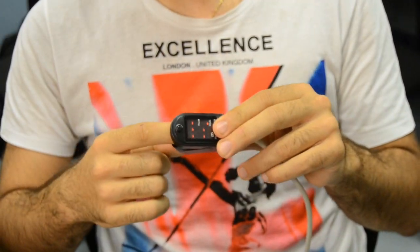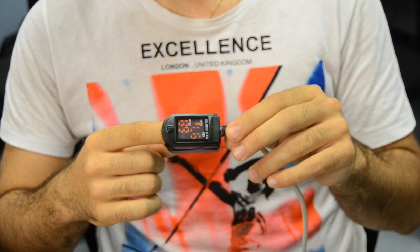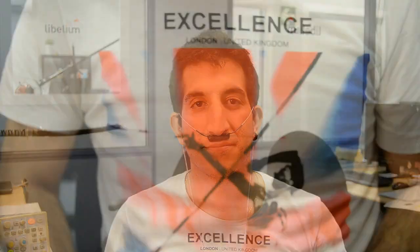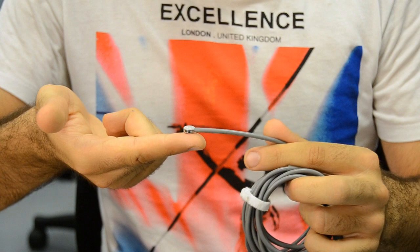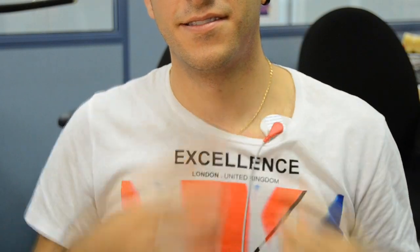Pulse sensor to measure the heart rate. Oxygen sensor to know the amount of oxygen in blood. Airflow to measure the breathing rate. Body temperature to measure the skin temperature. Electrocardiogram to see how the heart is working.